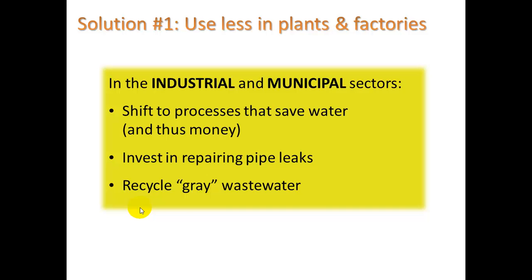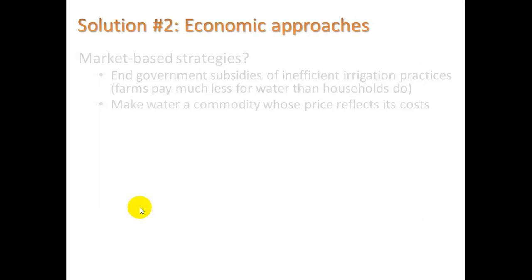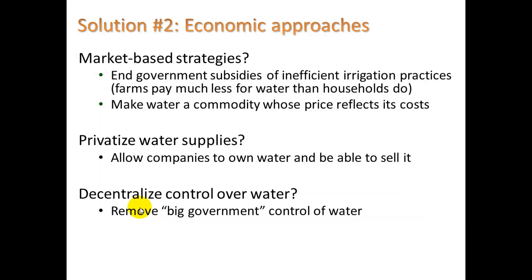You can also repair pipe leaks and use gray water. Economically, the general idea is whether water used more efficiently if it's privately owned versus government-subsidized — making water very cheap for farmers removes their pressure to conserve it.